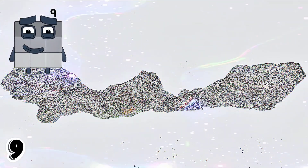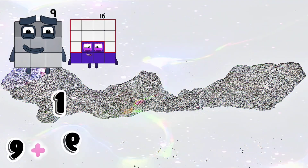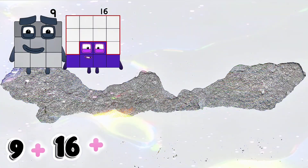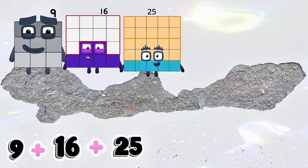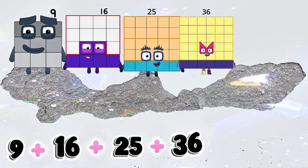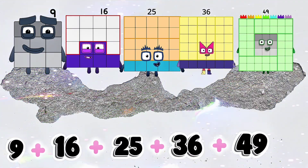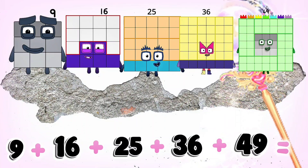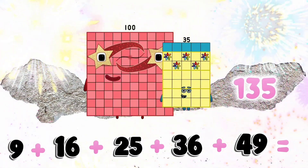9 plus 16 plus 25 plus 36 plus 49 equals 135.